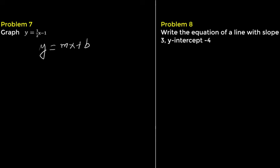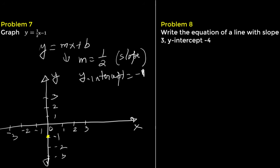Problem 7. Graph the equation y equals 1 half x minus 1. First, identify the slope, which is 1 half. The y-intercept is negative 1. Start at negative 1 on the y-axis. Using the slope 1 over 2 from the y-intercept, go up 1 unit and right 2 units. This is the second point. Now draw a line connecting these two points.